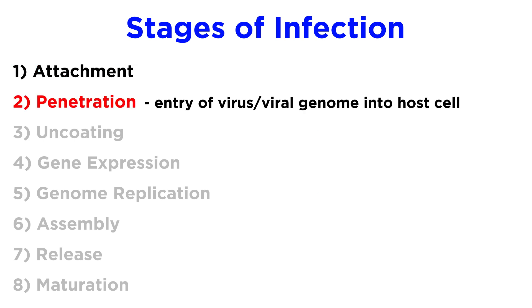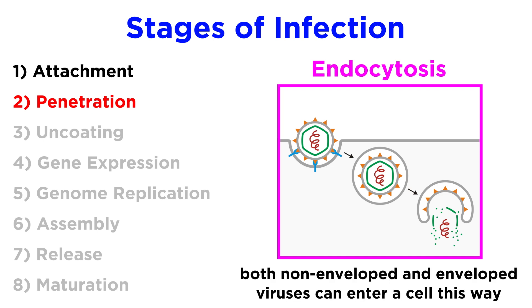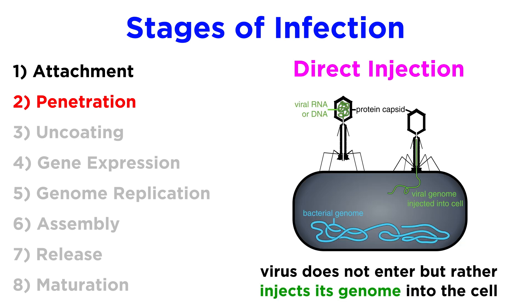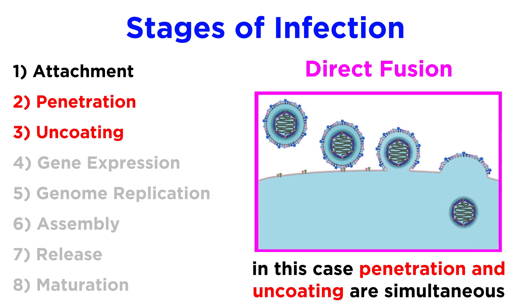Next up is penetration, which refers to entry of a virus or viral genome into the host cell. There are three known mechanisms for penetration. The first is called endocytosis, which literally means to bring something in from the outside, or to go into a cell. Both non-enveloped and enveloped viruses can use this method. The second is direct injection of the viral genome into the cell, as is done by bacteriophages. The third is direct fusion of the viral envelope with the plasma membrane of the cell, which only some enveloped viruses do. Note that in direct fusion or injection mechanisms, penetration and the next step, uncoating, are combined into a single step.